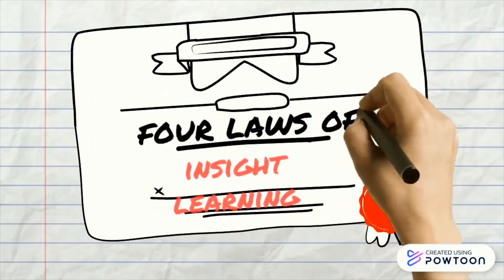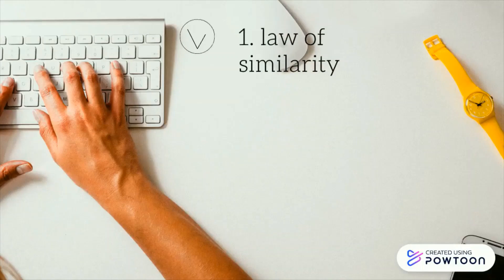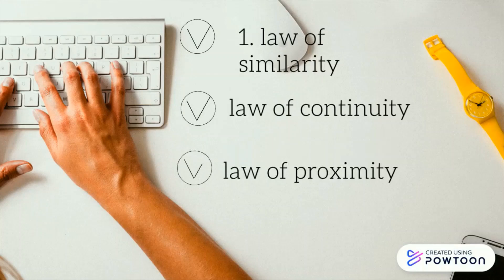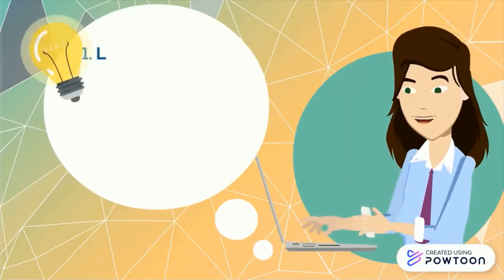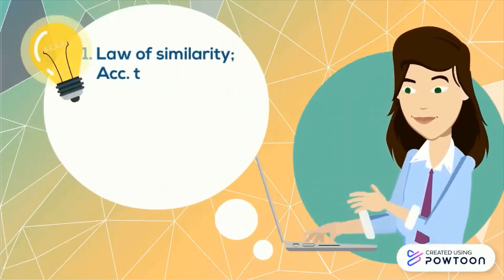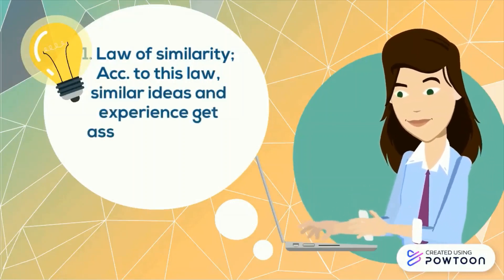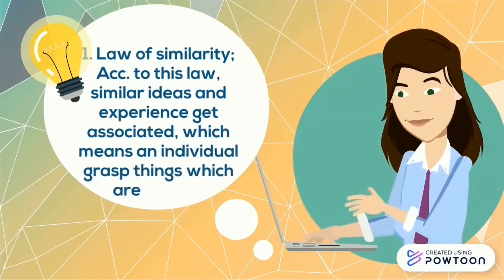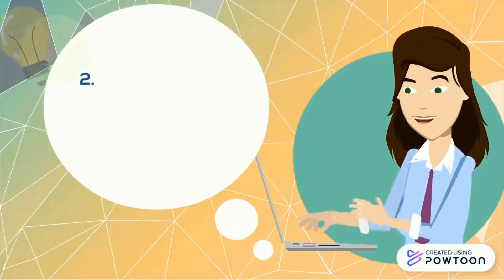Coming to the four laws of learning. The first is the law of similarity. According to this law, similar ideas and experiences get associated, which means an individual grasps things which are similar. For example, seeing an actor in a movie and remembering one of your classmates back in college days because of their similar looks.